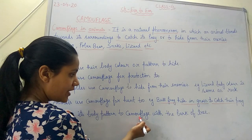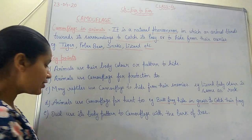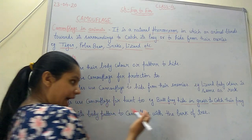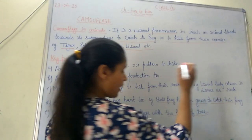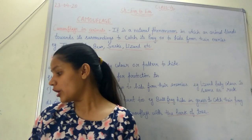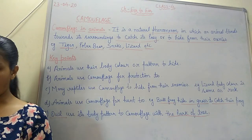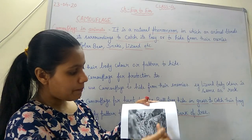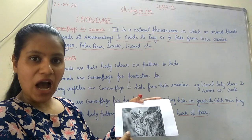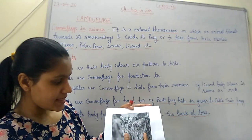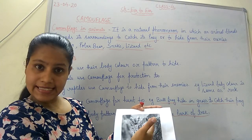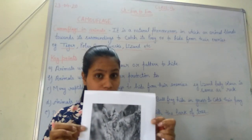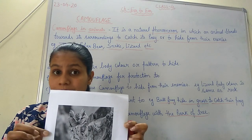The owl uses its body pattern to camouflage with the bark of the tree. Let me show you so it becomes easy to understand. Here is the bark of the tree, and here is an owl. You can see the body pattern of the owl is the same as the bark of the tree, which helps the owl blend with its surrounding — to hide from enemies and to catch prey.